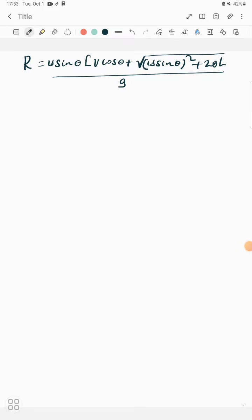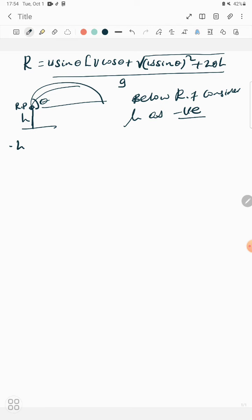Okay, let's see. The reference point is here at the corner. The object is projected at an angle below the reference point. Consider it as negative.